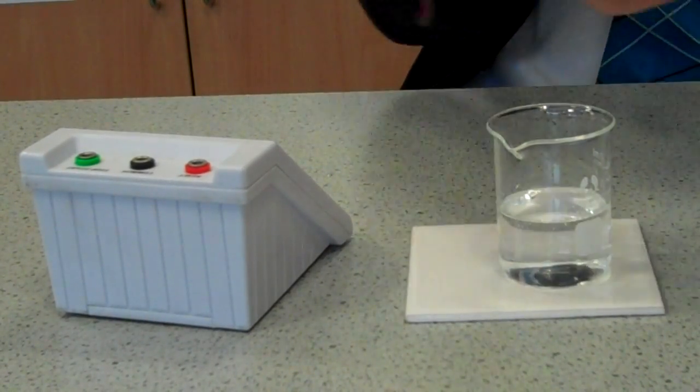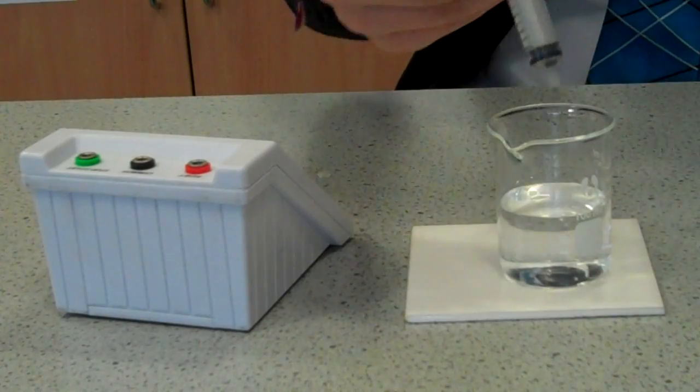We are using starch as an indicator, as when iodine is present it will change from colorless to blue-black.